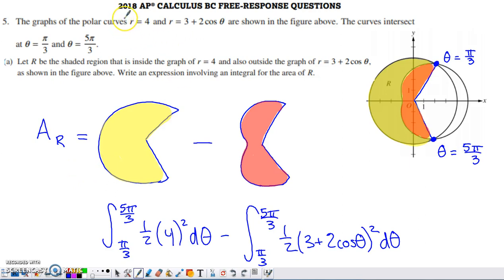So this is a problem from the 2018 AP Calc BC exam. It's problem number five, a non-calculator question that deals with some polar curves. We've got two polar curves graphed. One is r equals 4.